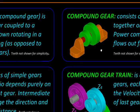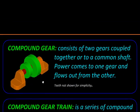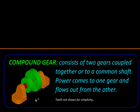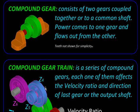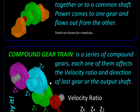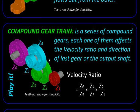Compound gear trains are made up of compound gears. Compound gears are like pairs of gears coupled to the same shaft, so when they rotate they will be rotating together at the same speed and the same RPM. This kind of compound gears can be connected to each other to form what is called a compound gear train.